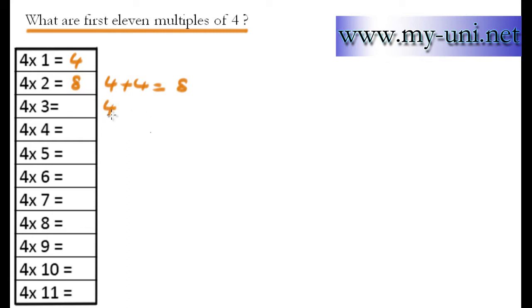4 times 3 means 4 has been added 3 times: 4 plus 4 plus 4, which equals 12. So 12 is the third multiple of 4.